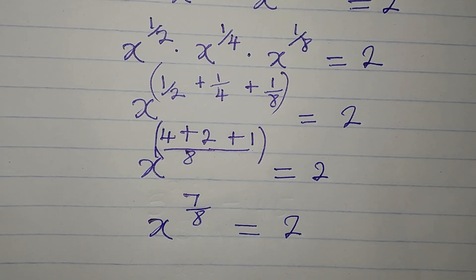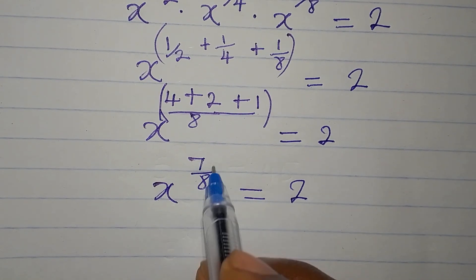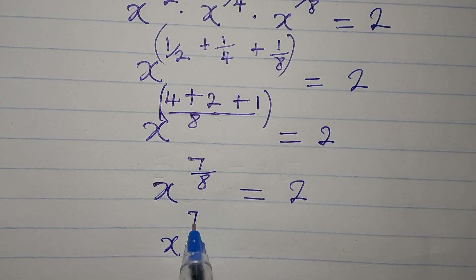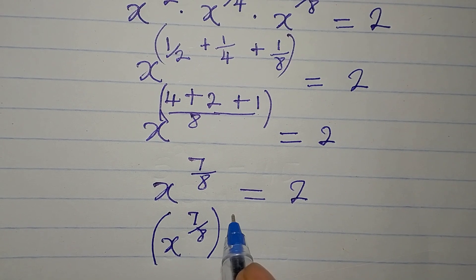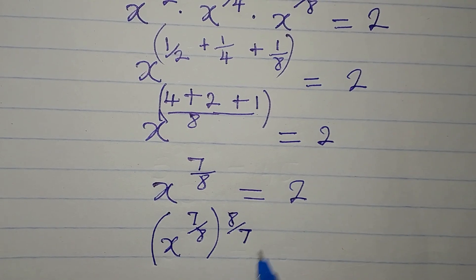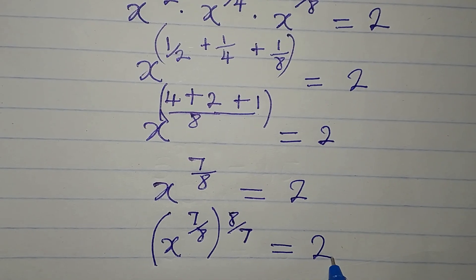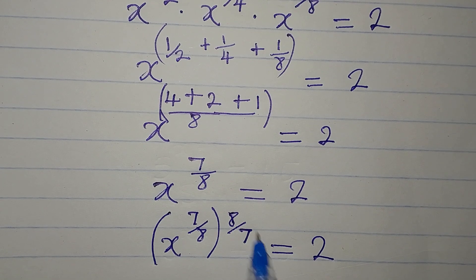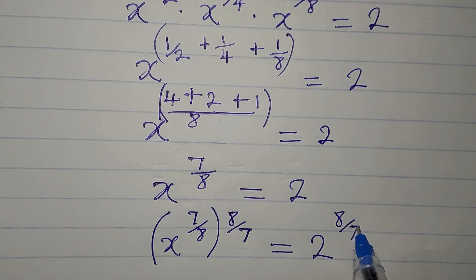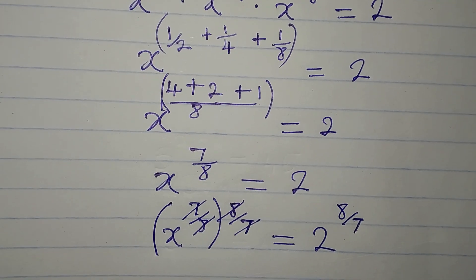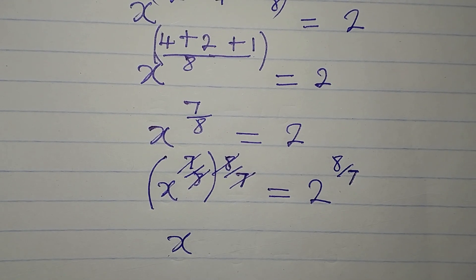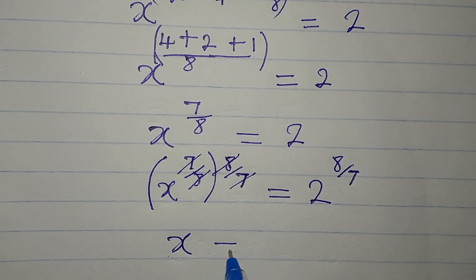We are looking for the value of x, so we need to remove the power 7 over 8. To do that, we raise both sides to the reciprocal of 7 over 8, which is 8 over 7. On the left, 7 over 8 times 8 over 7 equals 1, so we get x to the power of 1, which is just x. On the right, 2 raised to the power of 8 over 7. So x equals 2 to the power of 8 over 7.